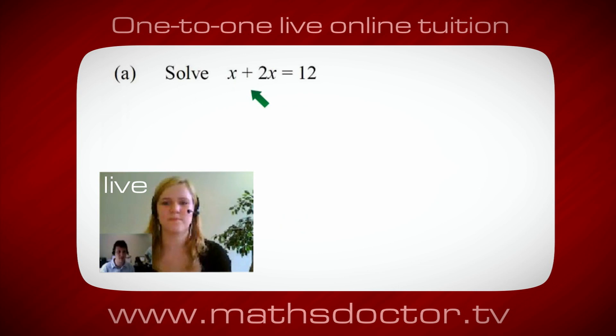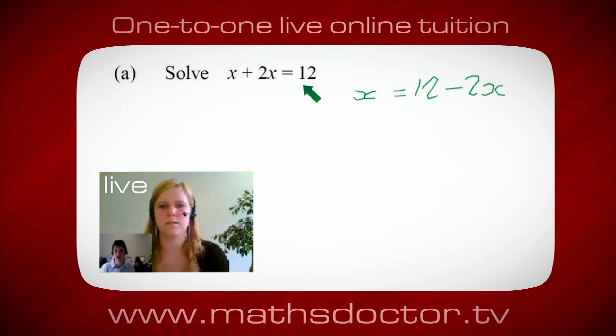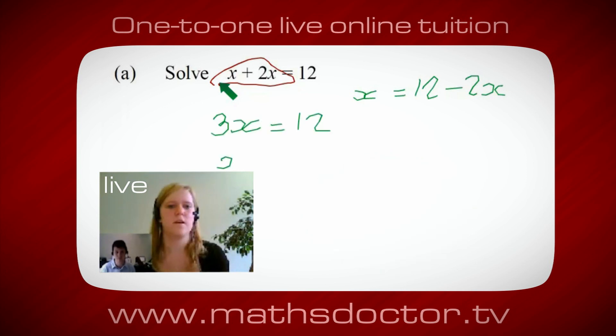So let's have a look at this one. So solve x plus 2x equals 12. So what do you think you do first? I want x on its own, so I would put x equals 12 minus 2x. Okay, so a lot of the time we want to get x by itself, but what we want to do first is get all of these x's together. So can you see anything we can do with this? Get all these together in one place. Oh okay, it's 3x, isn't it? Yeah, absolutely. So 3x equals 12. Oh, and so x equals 4. Brilliant, spot on, well done.